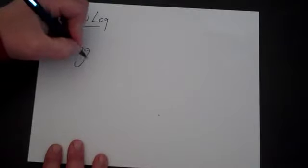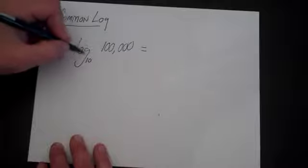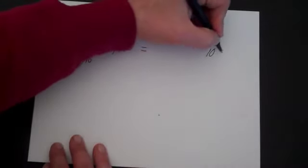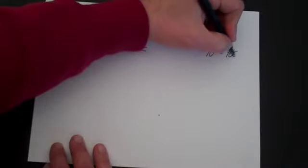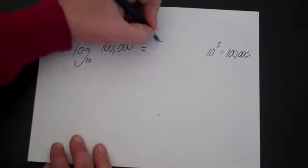All a common log is, is a log of base 10. So if they're so common, if we have log base 10 of, let's say, 100,000, we're going to try to find 10 to what power is 100,000. It's five zeros, that's 10 to the fifth, so that's five.